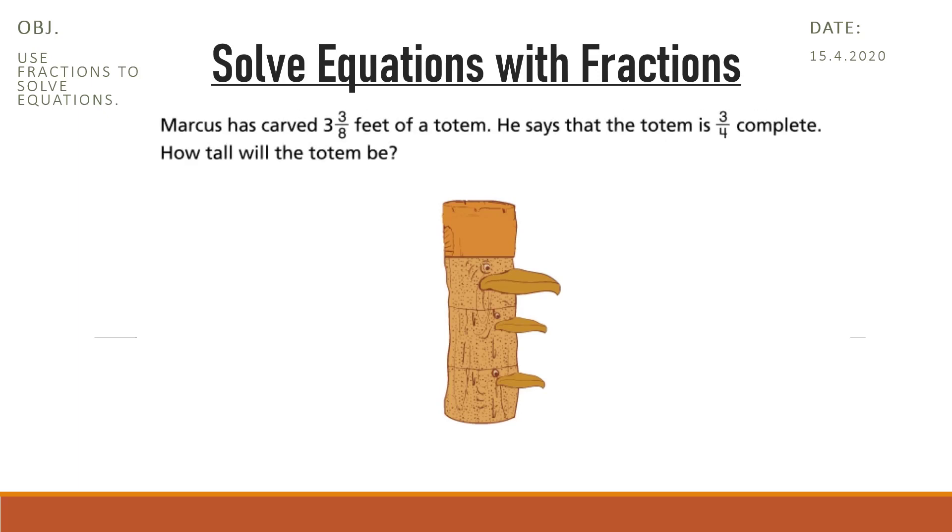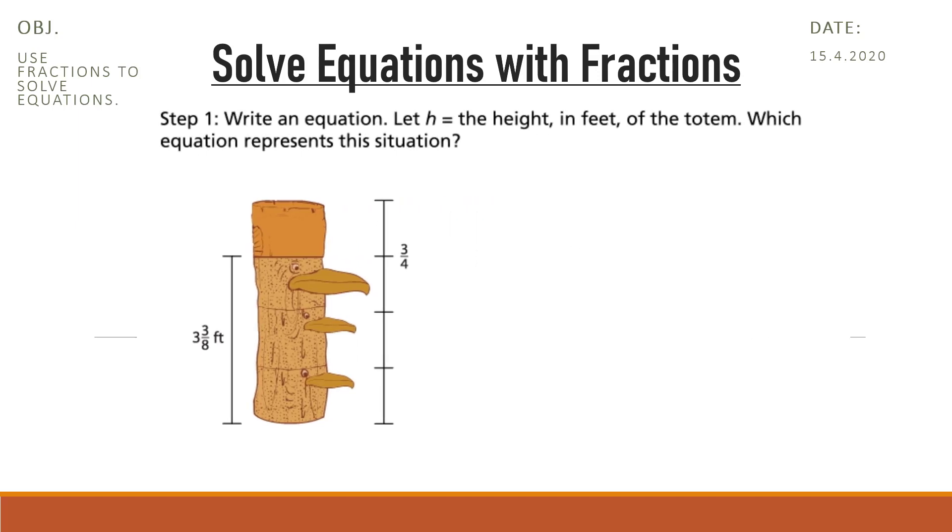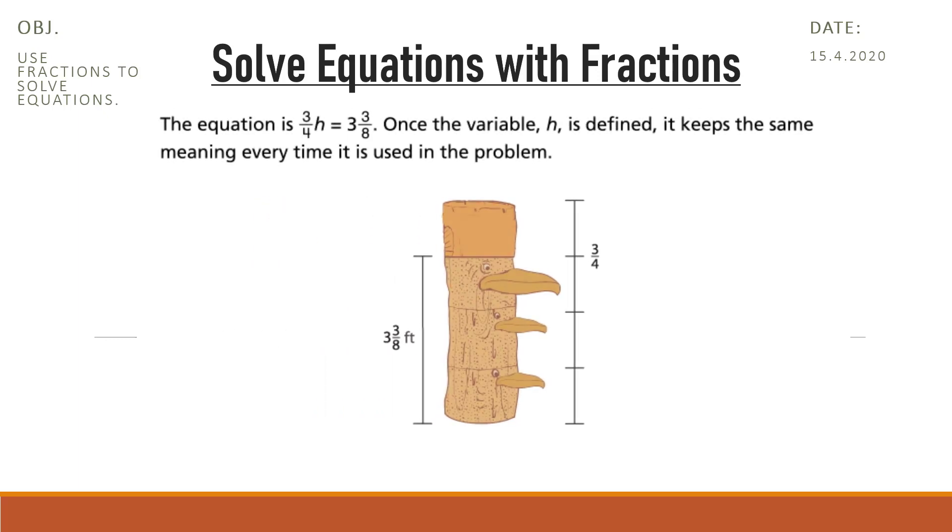Marcus has carved 3 and 3/8 feet of a totem. He says that the totem is 3/4 complete. How tall will the totem be? You can write an equation to describe this situation. Step 1: Write an equation. Let h equal the height in feet of the totem. Which equation represents this situation? The equation is 3/4h equals 3 and 3/8.